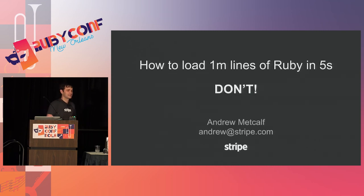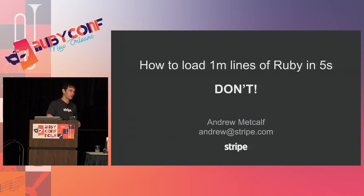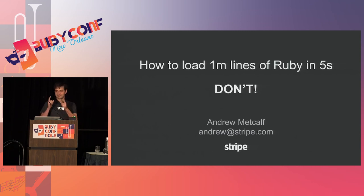In summary — I lied. How to load a million lines of Ruby in five seconds? Don't. Rather than solving hard problems, un-have the problem. Don't load code faster — use an autoloader and load less code. Don't run tests faster — run fewer tests. Don't try to reason about millions of lines of code — just modularize the code so that nobody has to reason about the whole thing at once.